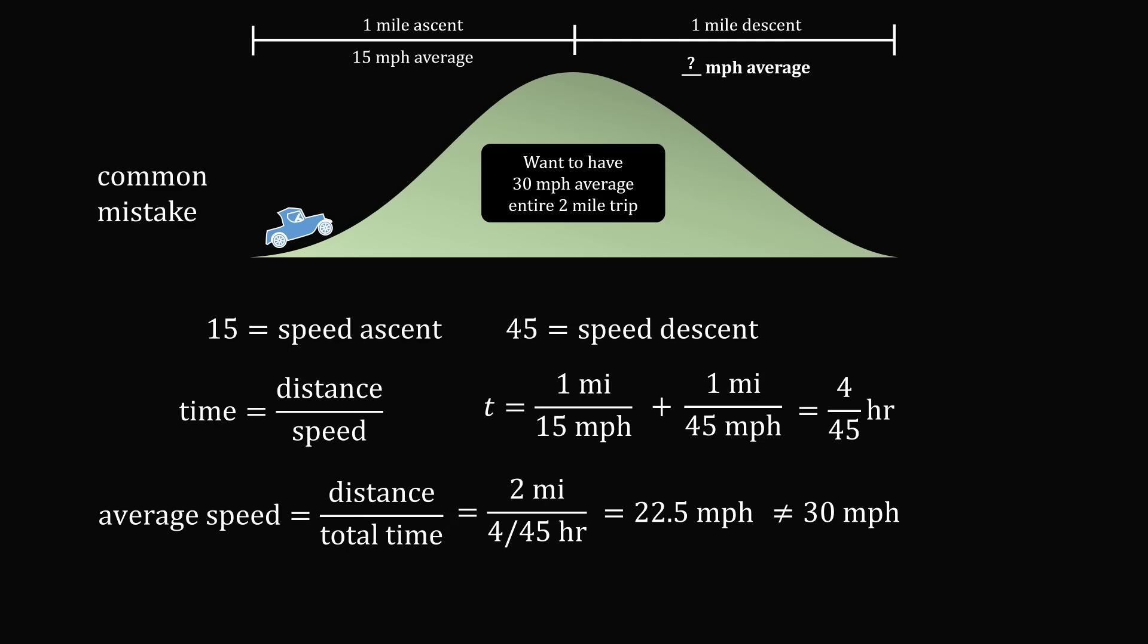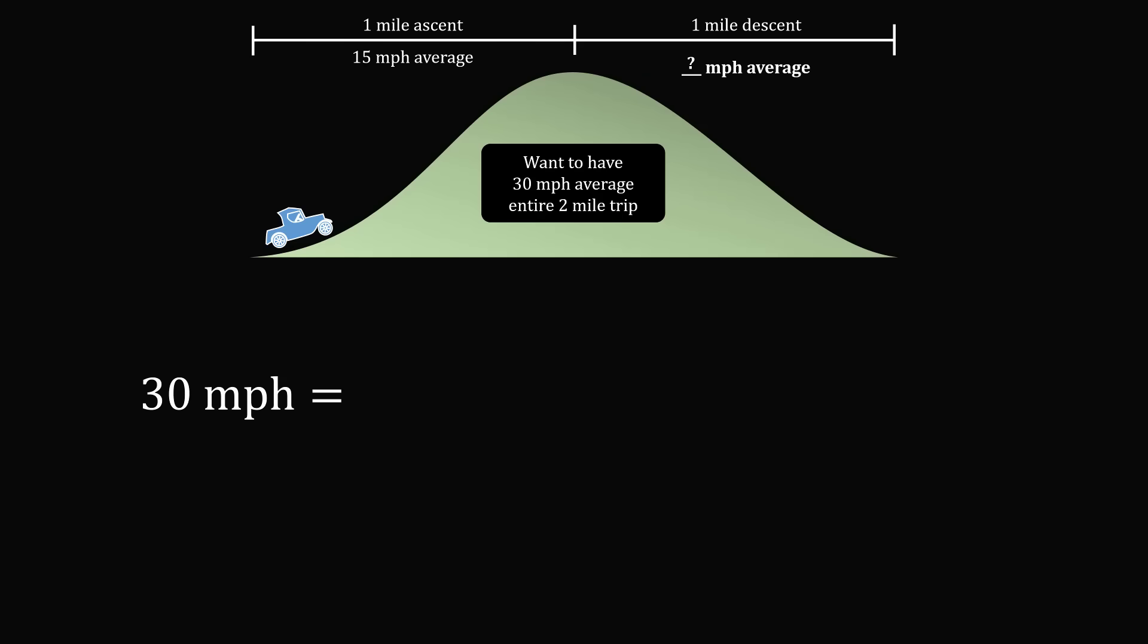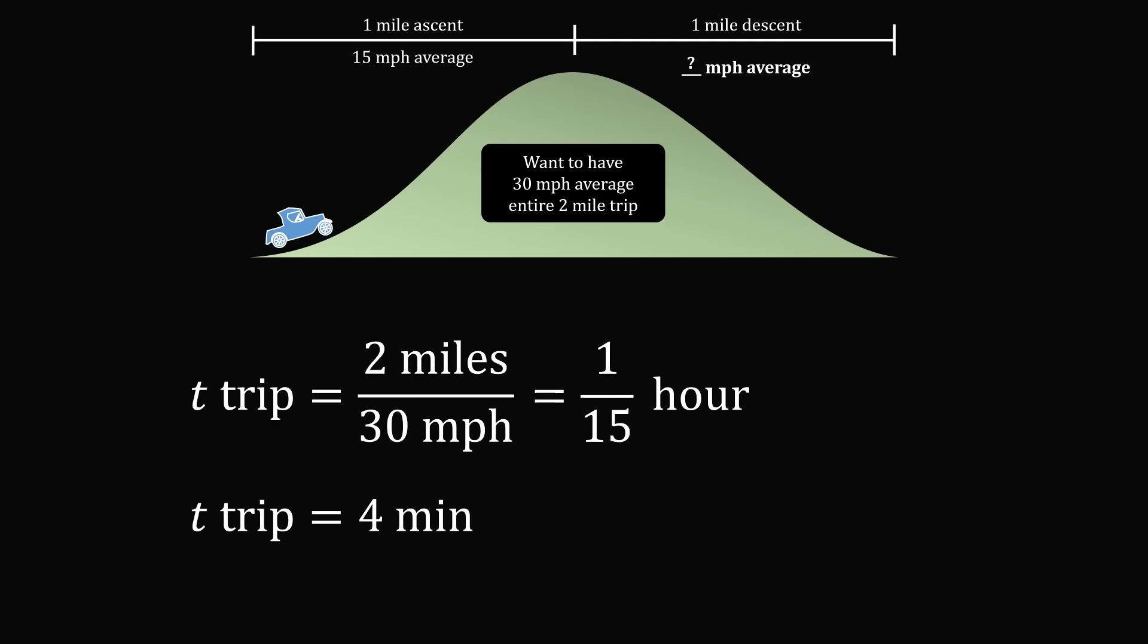So, how fast do we need to go? Let's go ahead and do that calculation. So, suppose we have an average speed of 30 miles per hour for the entire trip. We know the total distance is equal to 2 miles, and we need to calculate the time for the entire trip. We can go ahead and solve for the time for the entire trip, and we get that this is equal to 2 divided by 30, which equals 1 15th of an hour. As there are 60 minutes in an hour, this works out to be 4 minutes for the entire trip.